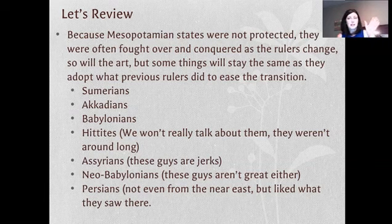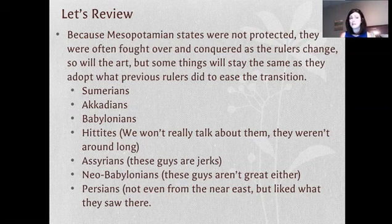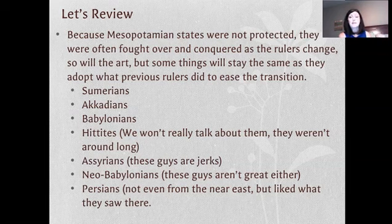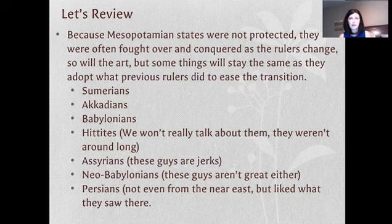We're going to talk about the different groups ruling over Mesopotamia. We start with the Sumerians — starts with S. Then the Akkadians, who basically just adapted what the Sumerians did. Then the Babylonians, who actually rule this area twice. If you're familiar with the Bible or the Old Testament, you've heard of the Babylonians — they were a big problem for the Jewish people in this area, where monotheism and Judaism developed. Abraham was actually from a Mesopotamian city-state.